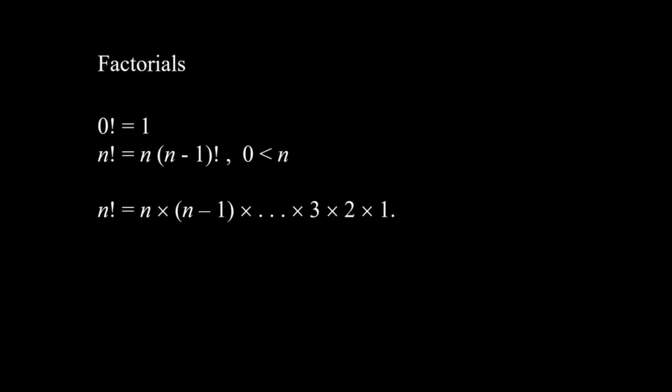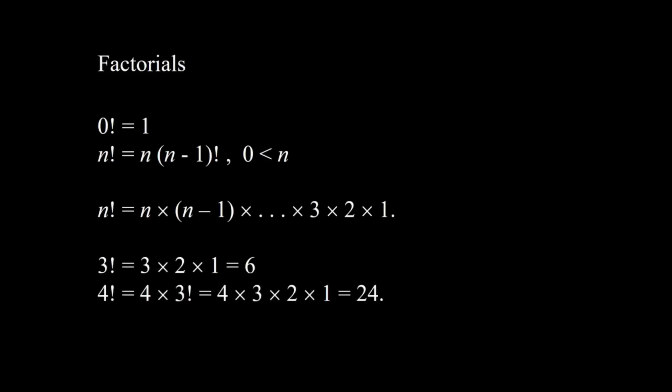Example: 3 factorial equals 3 times 2 times 1, which equals 6. 4 factorial equals 4 times 3 factorial, which equals 4 times 3 times 2 times 1, that is 24.